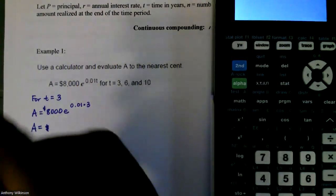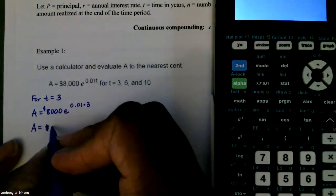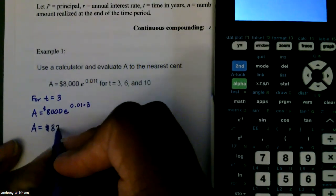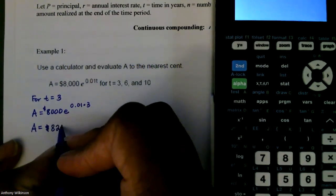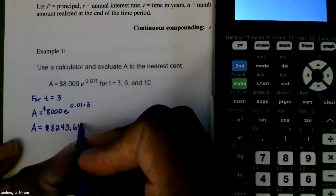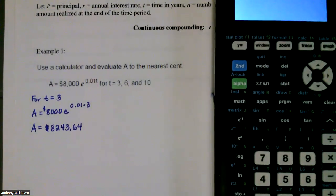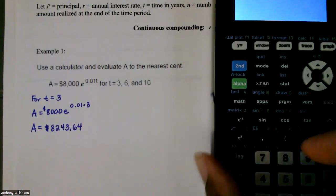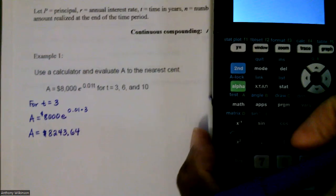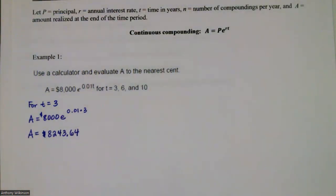So A will be equal to $8,243.64 when T is equal to 3.